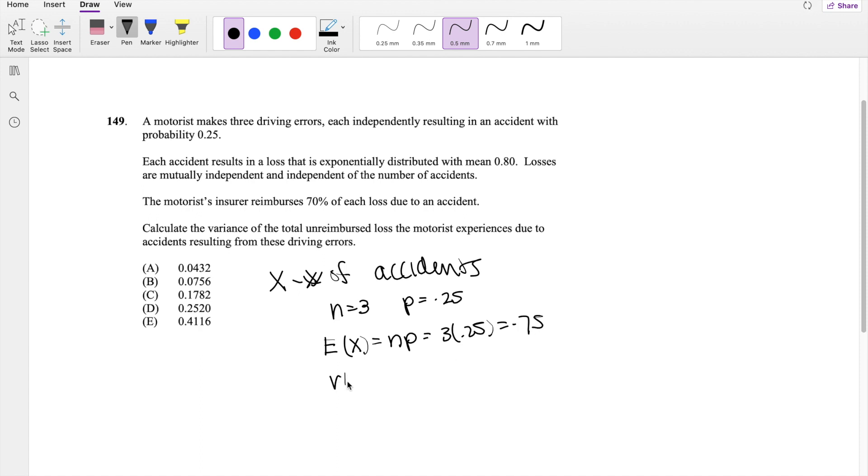And likewise, then we know the variance of X is equal to nPq, which is equal to 3 times 0.25 times 0.75, which is equal to 0.5625.